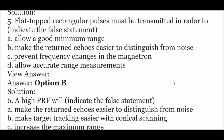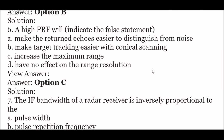Next question: flat-topped rectangular pulses must be transmitted in radar — indicate the false statement. Option A: allow a good minimum range, option B: make the returned echoes easier to distinguish from noise, option C: prevent frequency change in the magnitude, option D: allow accurate range measurement. The false statement is option B — make the returned echoes easier to distinguish from noise.